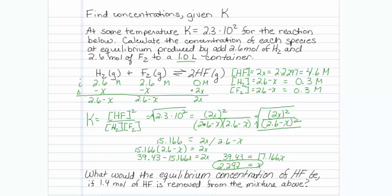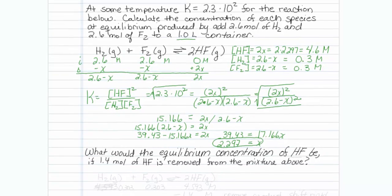Now let's look at the second part of the question. What would the equilibrium concentration of HF be if 1.4 moles of HF is removed from the mixture above? It looks like we're going to need a new reaction table.